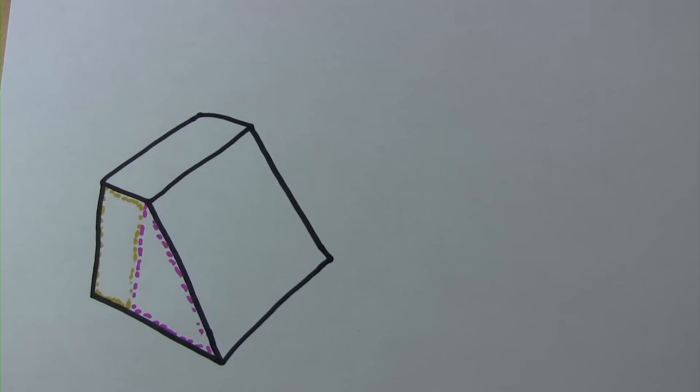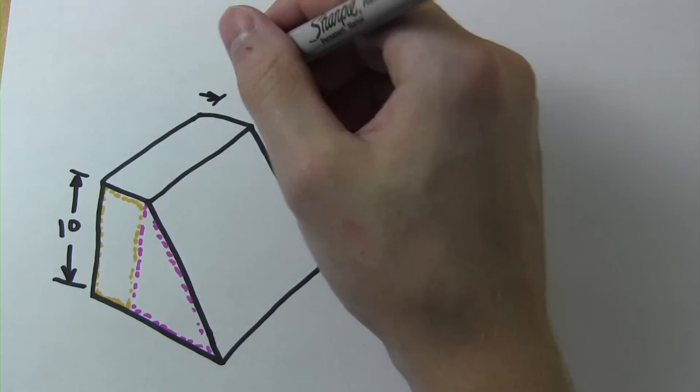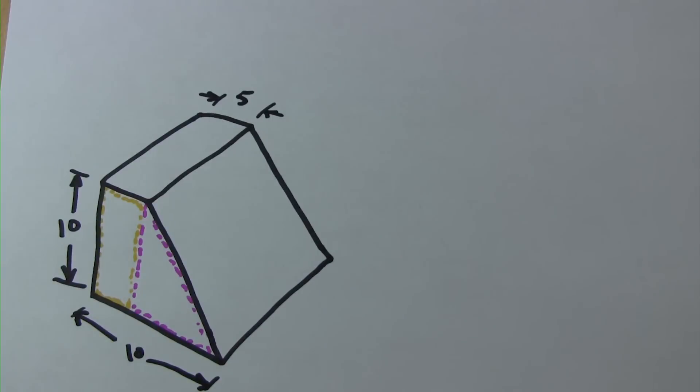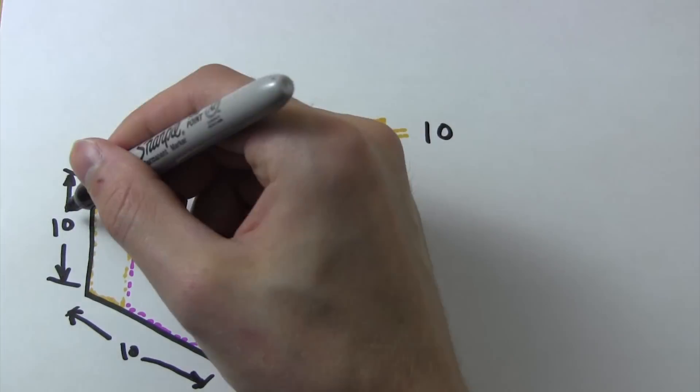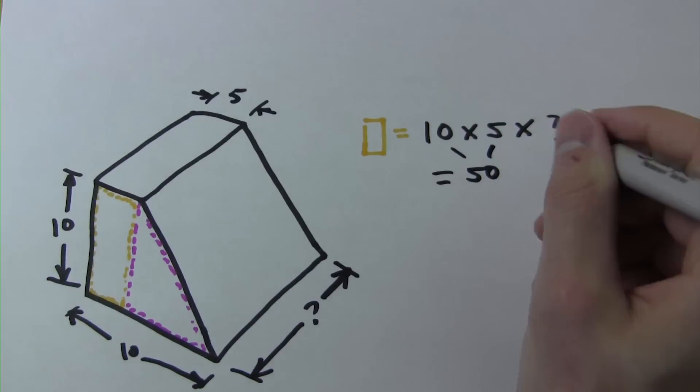Given the dimensions shown, we can determine that the volume of the rectangular section is the 10 inch height, multiplied by the 5 inch width, multiplied by the variable depth of the box.